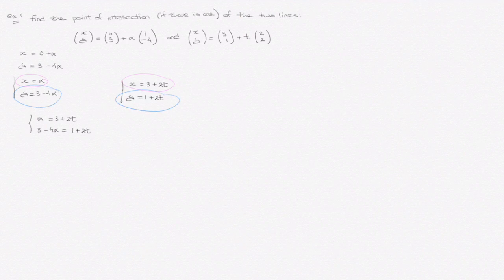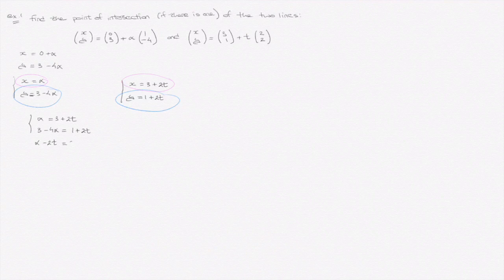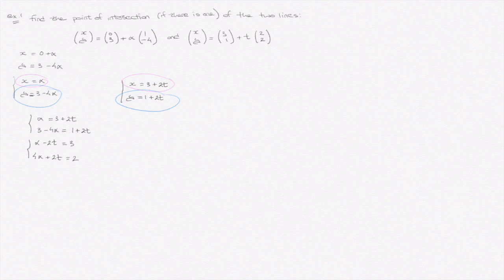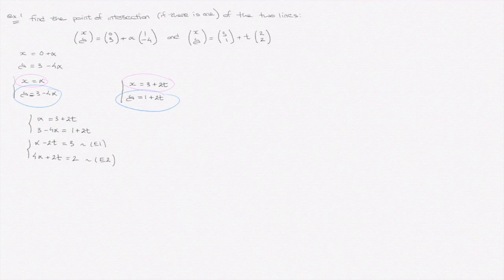This is a pair of simultaneous equations that we now have to solve for alpha and t. Rearranging so the unknowns appear on the left-hand side, we find alpha minus 2t equals 3, and 4 alpha plus 2t equals 2. It's a good habit to label the equations, so I'm labeling them e1 and e2. I'll add e1 to e2 in order to eliminate t.